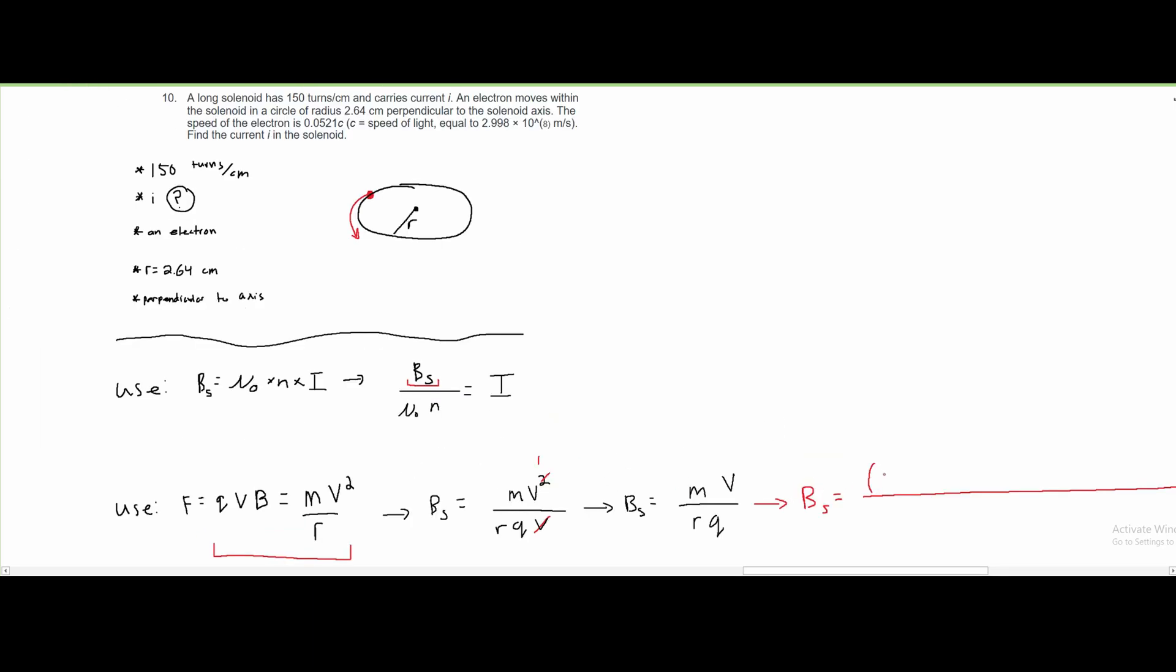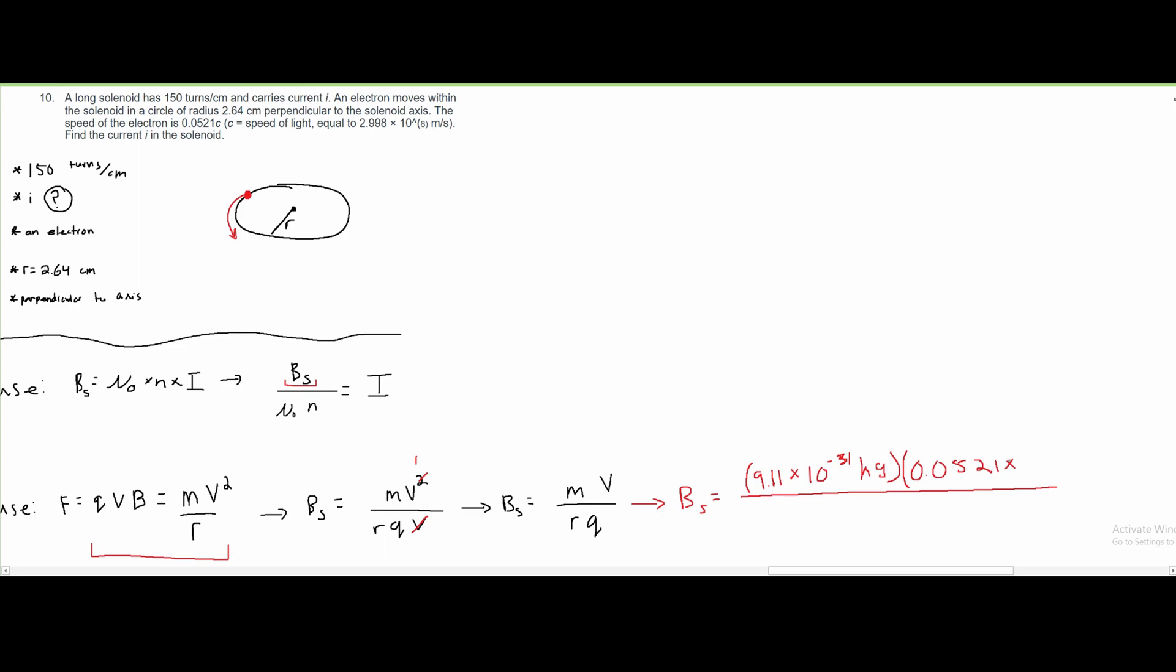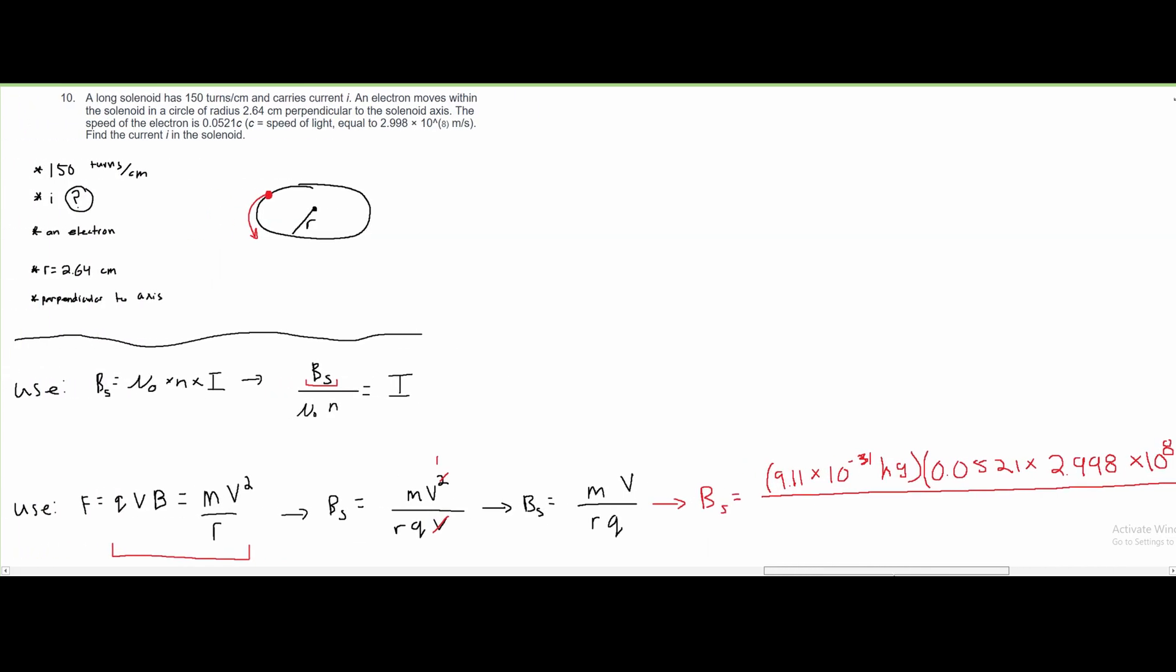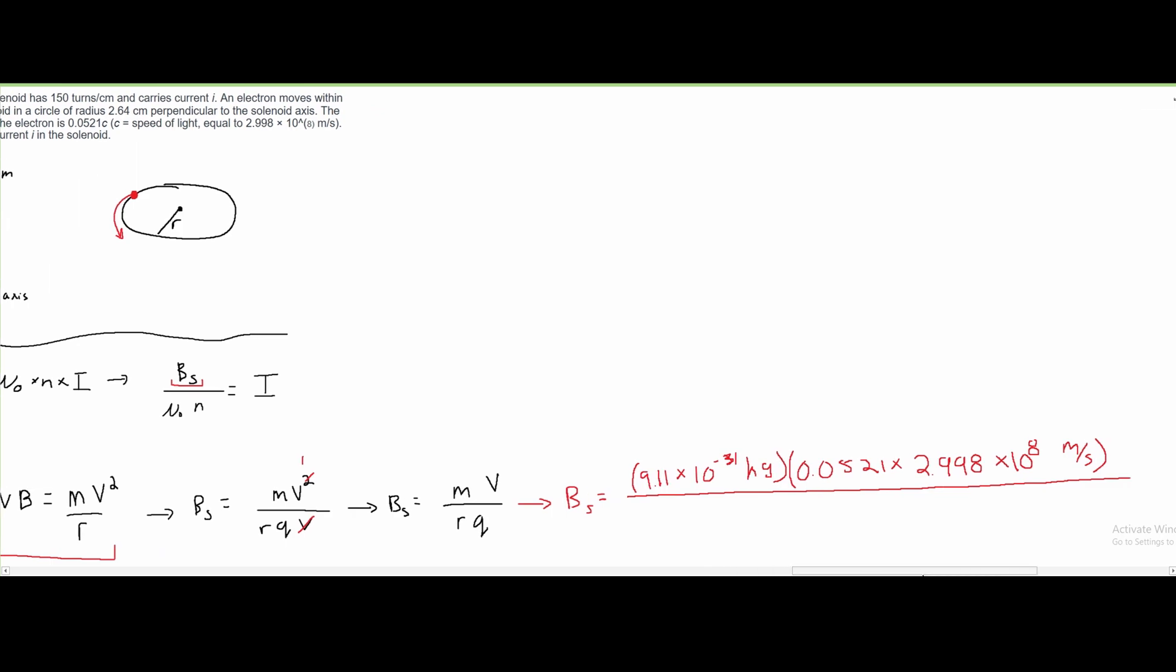The mass of an electron is known to be 9.11 times 10 to the negative 31st kilograms. We are then multiplying this by our velocity, which we are given as 0.0521, and this is being multiplied by the speed of light, which is 2.998 times 10 to the eighth meters per second. In our denominator, we're going to have our radius, which we were given as 2.64 centimeters, or we can say 2.64 times 10 to the negative 2 meters.